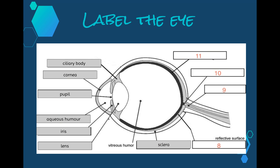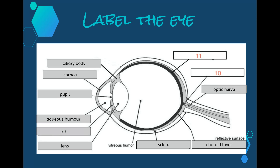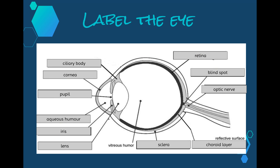Number seven is the outer white layer of the eye, called the sclera. Number eight is a really thin layer between the sclera and the inner layer of the eye, called the choroid layer. Number nine is the optic nerve, which connects our eye to our brain. Number ten is the blind spot, located on our retina where the optic nerve meets the inside of our eyeball. And lastly, the retina, which is another really important part of our eye.